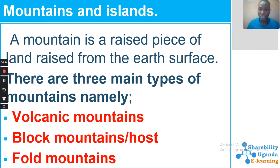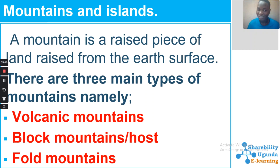There are three main types of mountains: volcanic mountains, which are formed as a result of volcanic eruption; block mountains, also called horst mountains, which are formed as a result of faulting; and fold mountains. Block mountains include Mountain Rwenzori, which is called the Mountain of the Moon.